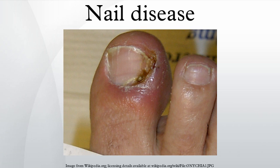Onychomatricoma is a tumor of the nail matrix. Nail pemphigus is an autoimmune disease. Erythronychia refers to red bands in the nail from some inflammatory conditions. Melanonychia is a black or brown discoloration of the nail with numerous causes.